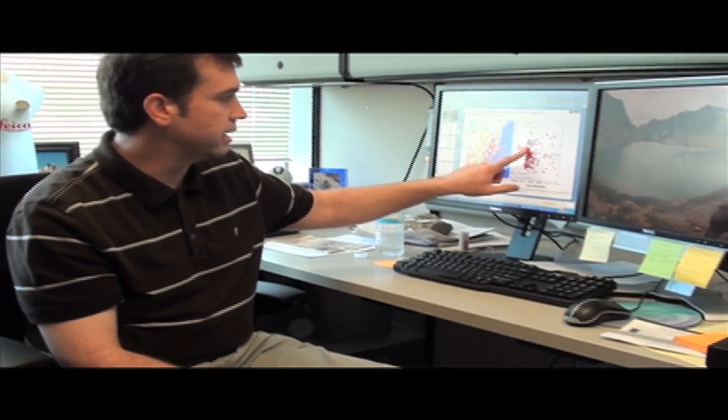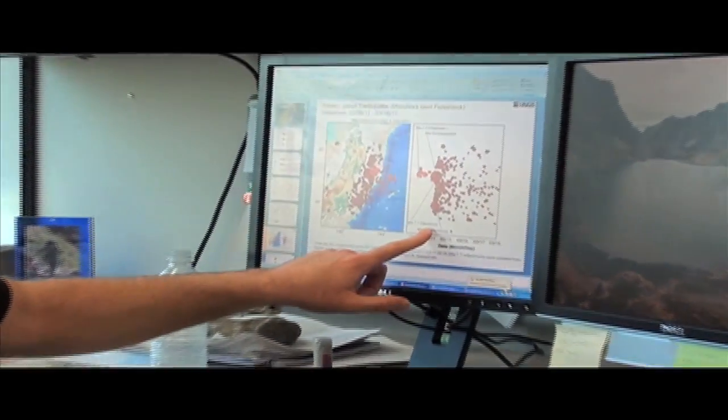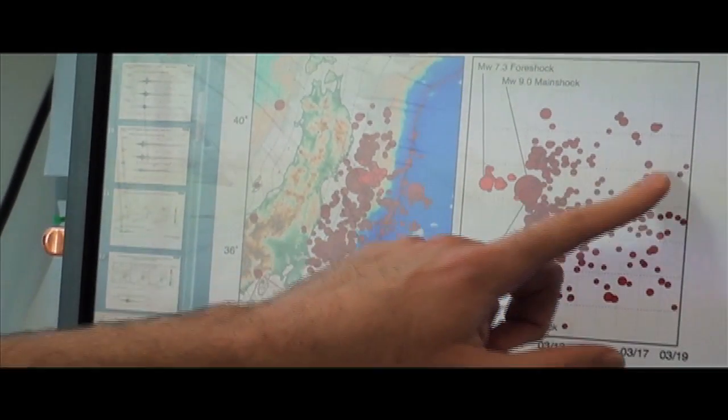So here's the foreshocks. There's the main shock, the 9.0 on March 11th. And then there's been hundreds and hundreds of aftershocks. And the general area of the aftershocks is mostly confined to northern Japan.